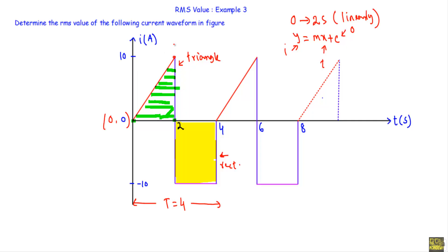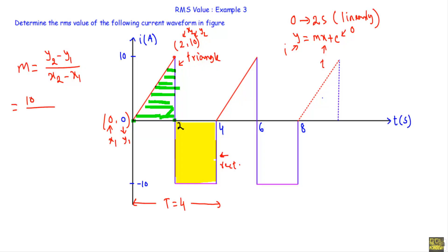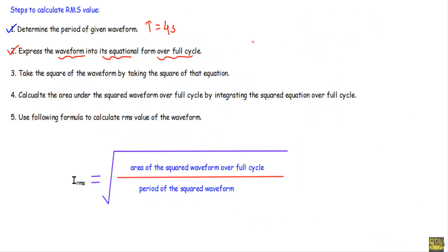The slope of this straight line: the origin is (0, 0) and the endpoint coordinate is (2, 10), so x₂ = 2 and y₂ = 10. The slope equals (y₂ − y₁) divided by (x₂ − x₁), which gives (10 − 0) / (2 − 0) = 5. Therefore our instantaneous current equation is i = 5t for t equal to 0 to 2 seconds.